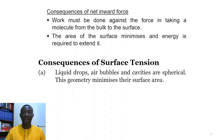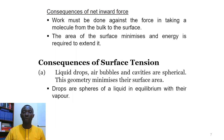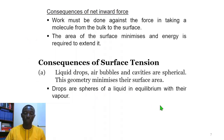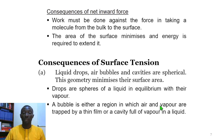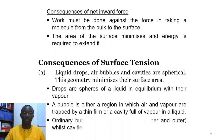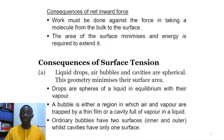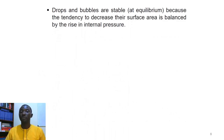Drops are spheres of liquid in equilibrium with their vapor. A bubble is either a region in which air or vapor are trapped by a thin film, or a cavity full of vapor in a liquid. Ordinary bubbles have two surfaces — an inner one and an outer one — while cavities have only one surface. Drops and bubbles are stable at equilibrium because the tendency to decrease their surface area is balanced by the rise in internal pressure.